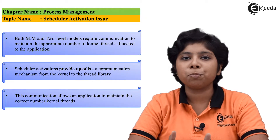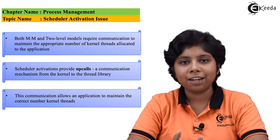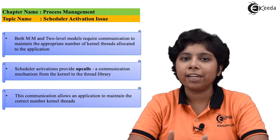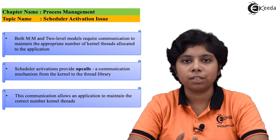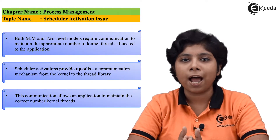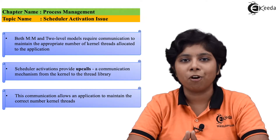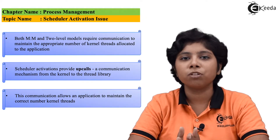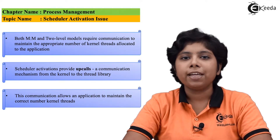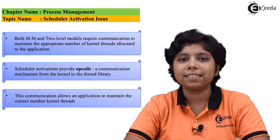Consider a CPU-bound process which is to be run on a single processor. Here, only one thread at a time can run, so one LWP is sufficient. But if you consider an IO-intensive process which has several tasks to be performed, then it may need more than one LWP to be used efficiently. Each LWP is needed for each concurrent blocking system call.